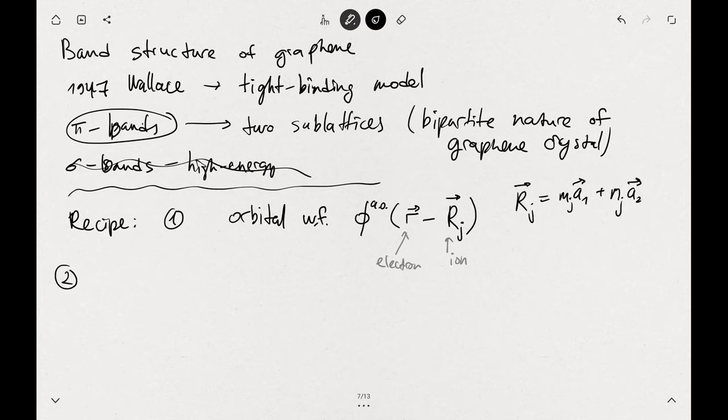The second part: our trial wave function must reflect the symmetry of underlying lattice, of graphene hexagonal lattice. It must be invariant under translation by arbitrary r_j, by arbitrary lattice vector.